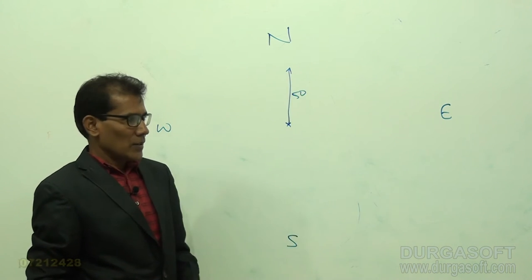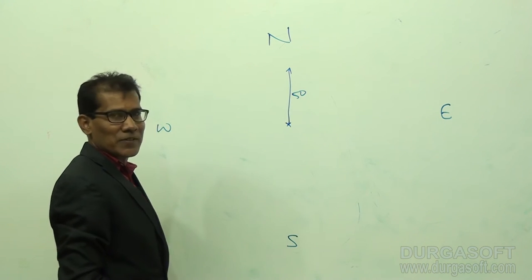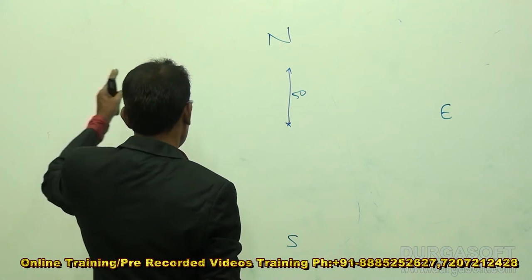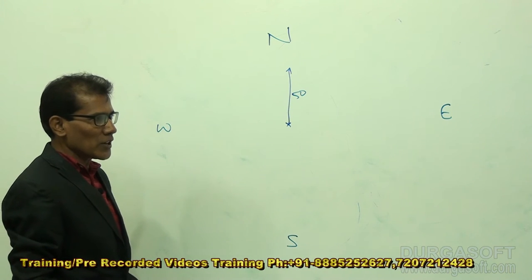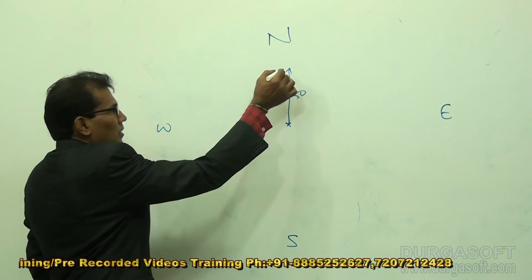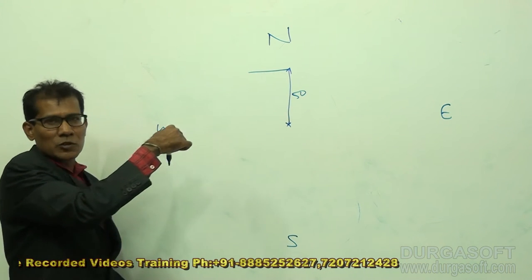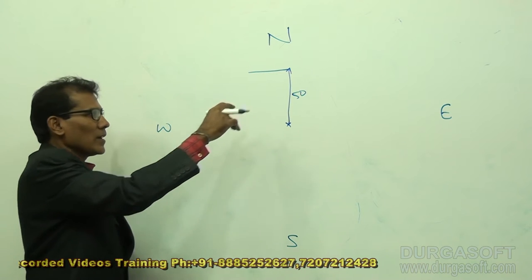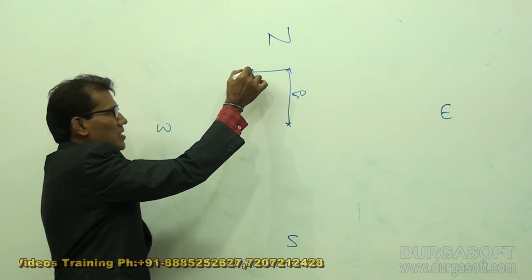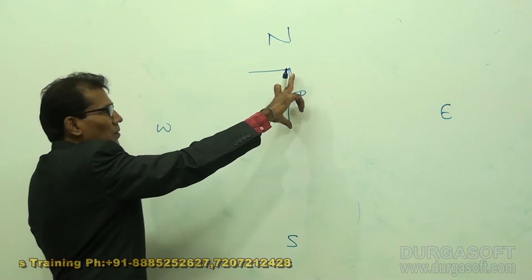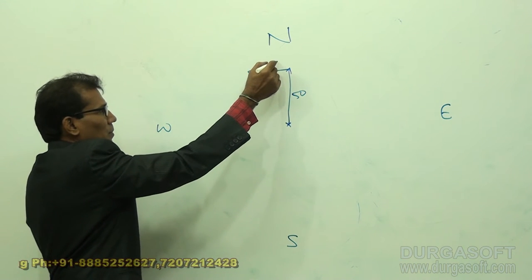Neeta moved 50 meters towards north. She then turned to the left — left means towards west. Turn left and walk for about 25 meters towards west. The diagram should be drawn to approximate scale. Since 50 meters is taken as a reference, 25 meters must be approximately half of that. So this is the 25 meters.